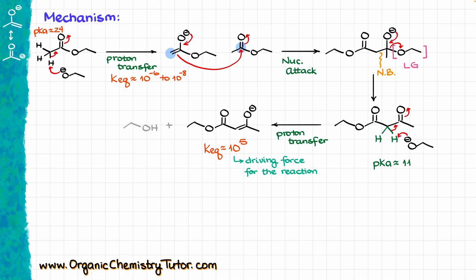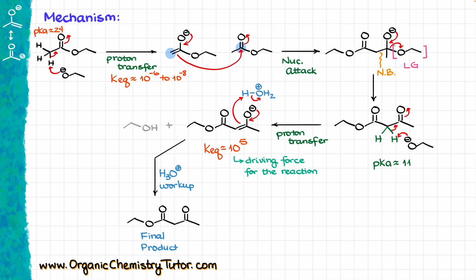Once we have our enolate product, that is where our acidic workup comes into play. During our acidic workup, we are going to re-protonate our molecule, essentially getting rid of our enolate, giving us our final product — a 1,3-dicarbonyl. In this particular case, that is going to be a 3-ketoester, or sometimes we also call it a beta-ketoester.